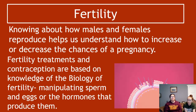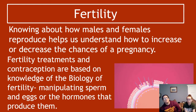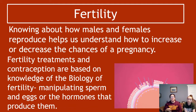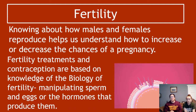Knowing about how males and females reproduce actually helps us understand how to increase or decrease the chances of a pregnancy. It's really difficult to get someone pregnant if you have zero idea how that happens. Understanding fertile and infertile times lets you advise on when to have sex, and understanding how sperm are produced helps advise on what to avoid. Fertility treatment and contraception are both based on knowledge of the biology of fertility.